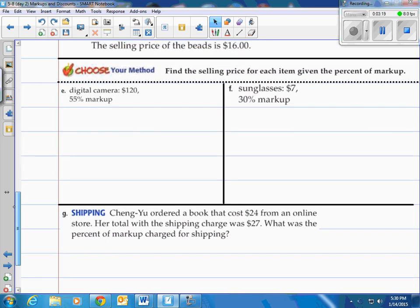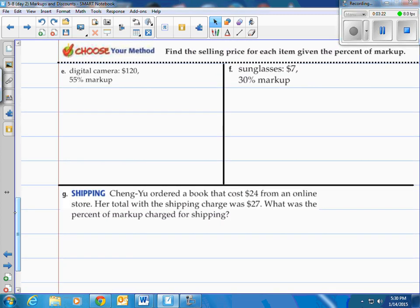Why don't you give it a shot here on these three. Come on back see how you do. So they have a digital camera. Let's find the selling price for each item given the percent of markup. In E, digital camera, it's $120, but they want to add on a 55% markup.